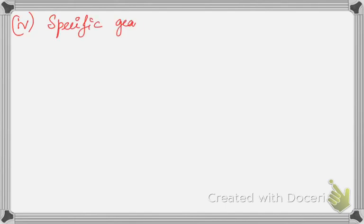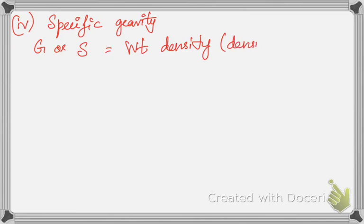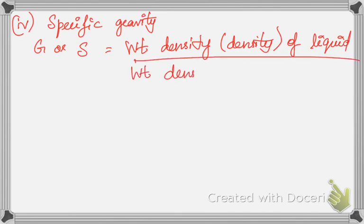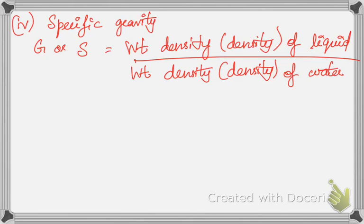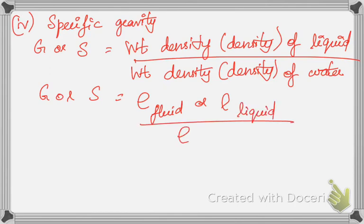The fourth property is specific gravity, denoted as S (or SG). It is the ratio of the weight density (or density) of any fluid to the weight density (or density) of water. It can be written as ρ_fluid / ρ_water. Since both are densities, the units cancel out, so specific gravity has no unit — it is dimensionless.